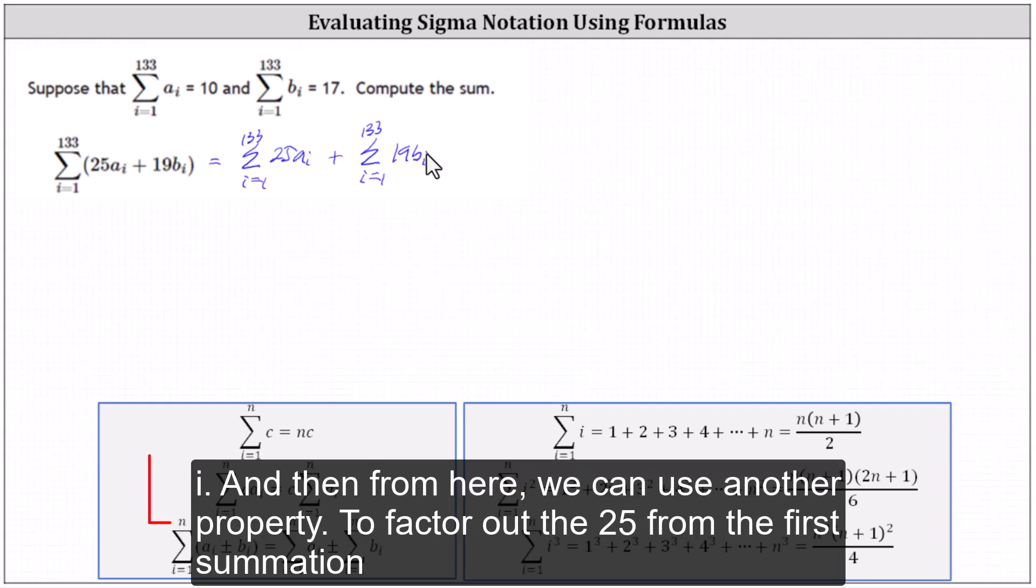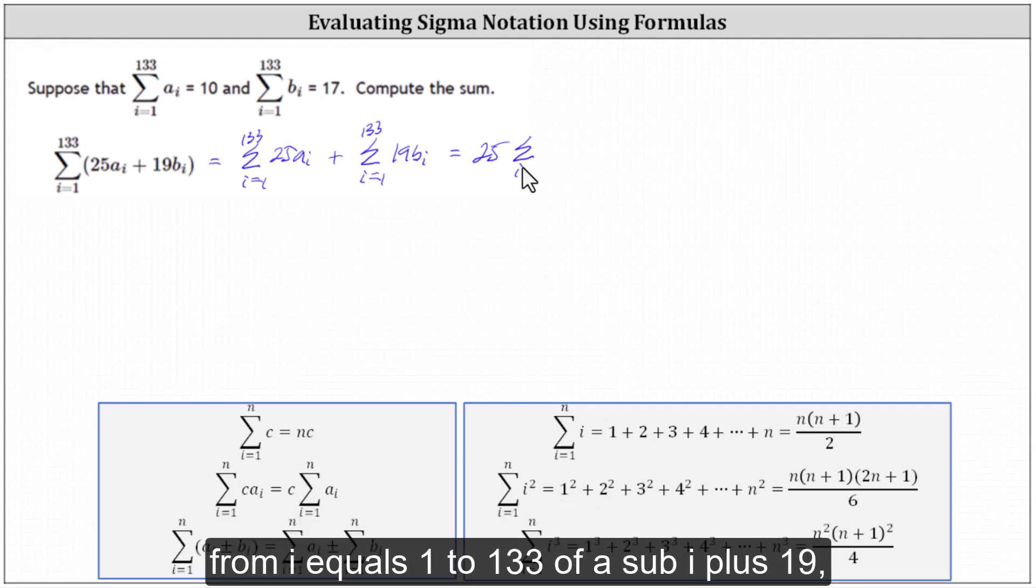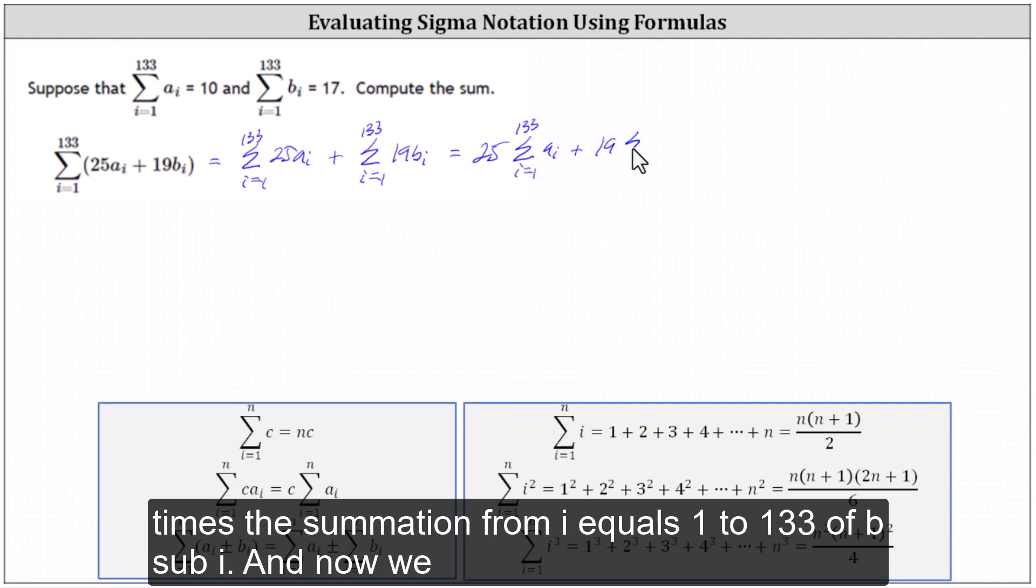And then from here we can use another property to factor out the 25 from the first summation and 19 from the second summation. This is equal to 25 times the summation from i equals 1 to 133 of a sub i plus 19 times the summation from i equals 1 to 133 of b sub i.